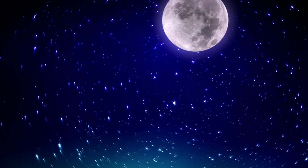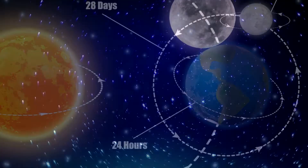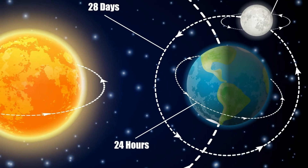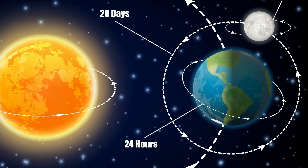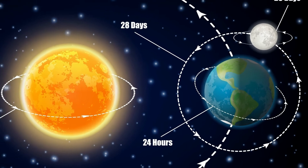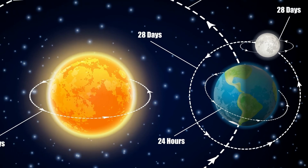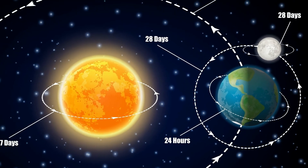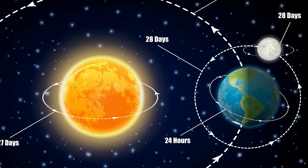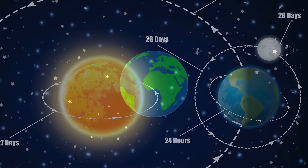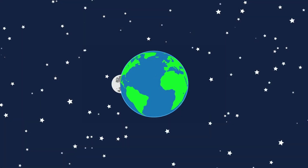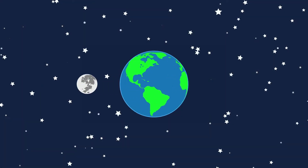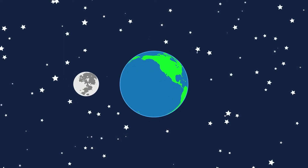The moon appears to move completely around the Earth in about 27.3 days as observed from the Earth. This is called the sidereal month, and it represents the orbital period of the moon around the Earth.